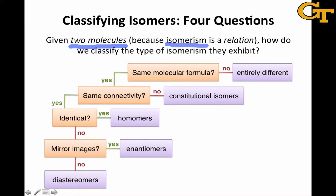That's an important concept to understand about isomerism — it refers to two molecules and the relationship between them. It's kind of like friendship. It doesn't make much sense to say John is a friend unless we know who he's a friend of. To be a friend, you have to be a friend of somebody. Isomerism works the same way. You can't just be a constitutional isomer; you have to be a constitutional isomer of a different molecule.